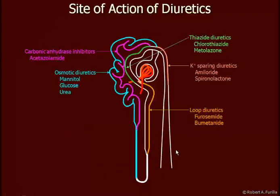I've placed on here color coding to give you an idea where these different diuretics work. Osmotic diuretics, mannitol, glucose, and even urea, work primarily in the proximal tubule and even down into the descending limb of the loop of Henle. Carbonic anhydrase inhibitors, acetazolamide, for example, work primarily in the proximal convoluted tubule.